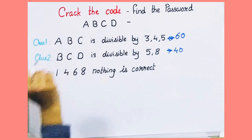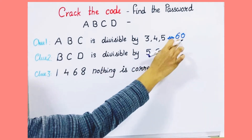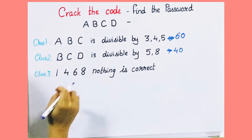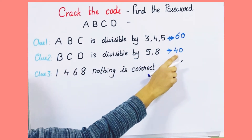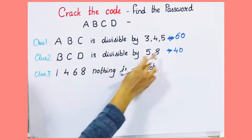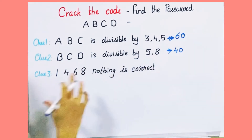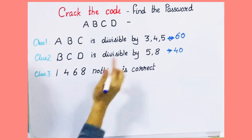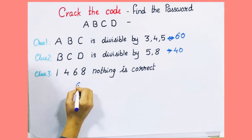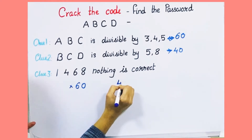So if we take 60 for ABC, the digit 6 appears, so we can't take it. And if BCD is 40, the digit 4 appears, so we can't take that either. Therefore, we need to take multiples of 60, since we can't use 60 itself.